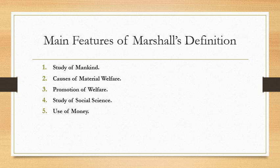Number 5: Use of money. This definition considers material or economic welfare as a part of social welfare, which can be easily measured with the measuring rod of money.